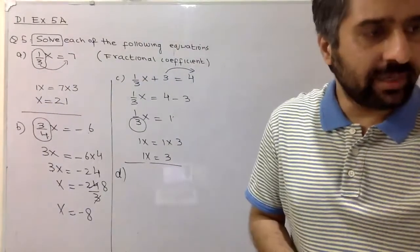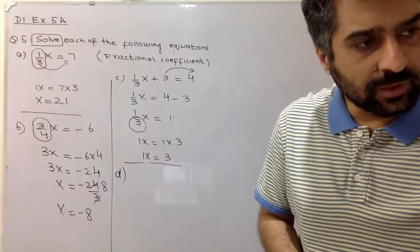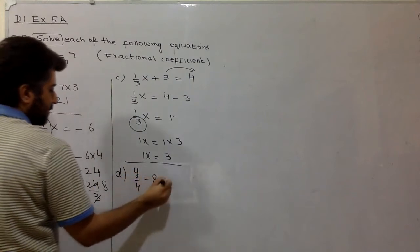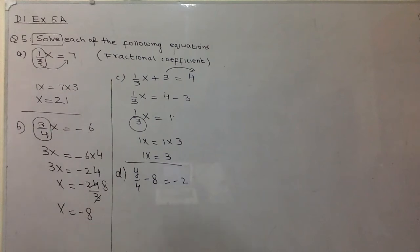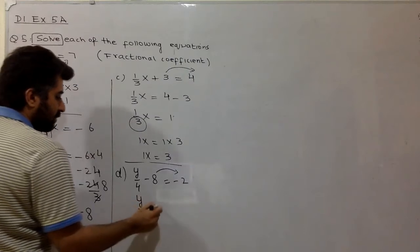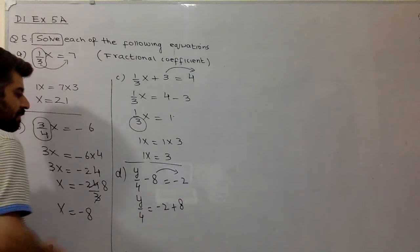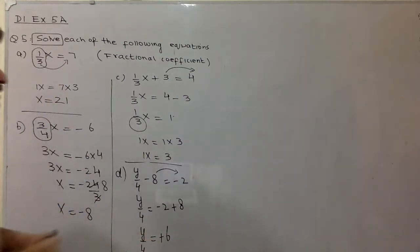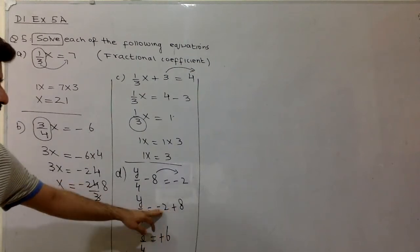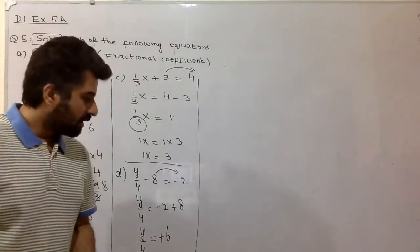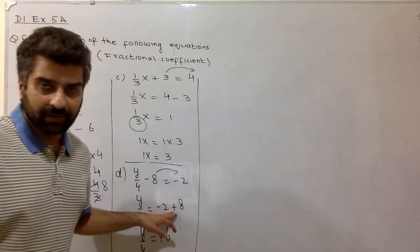Part D is: y over 4 minus 8 is equal to minus 2. The variable is now y. The process is the same — move minus 8 to the right side. So y over 4 equals minus 2 plus 8. This is a common mistake point: minus 2 plus 8 gives plus 6, because when signs are opposite there is reduction, but the sign of the larger number is retained — so plus sign is retained.